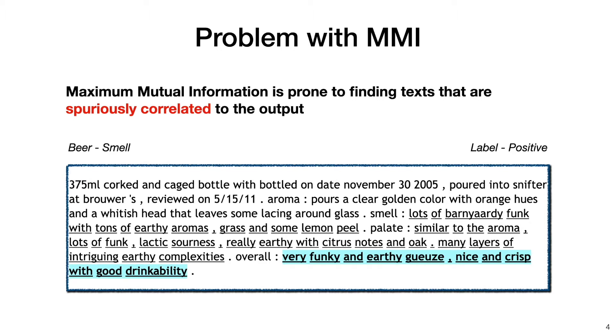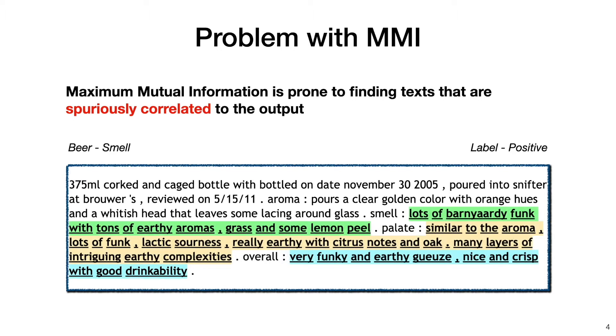As a summary, we have seen an example where there are three sentences that are strongly correlated with the output, so the MMI criterion is free to choose any of them. However, we only want the algorithm to select the first sentence because it is most likely to be associated with the cause of the smell score.